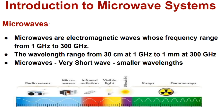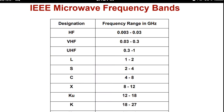The waves above 300 gigahertz are called millimeter waves and submillimeter waves based on their wavelength. The microwave frequency spectrum is very large, from 1 gigahertz to 300 gigahertz. Giga means 10 to the power 9.